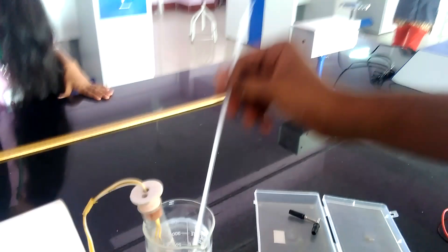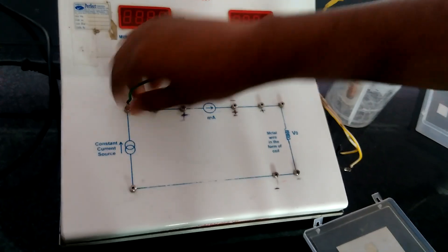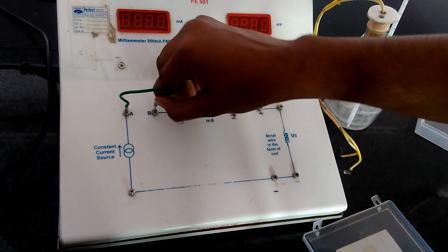This is a copper coil, this is a thermometer, and this is a beaker. Now first match A to B to form a closed circuit.